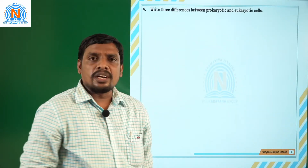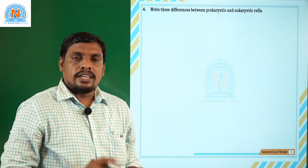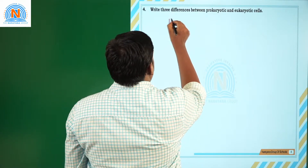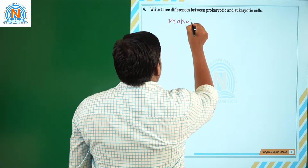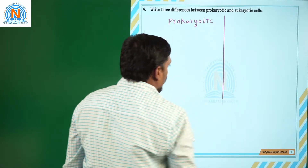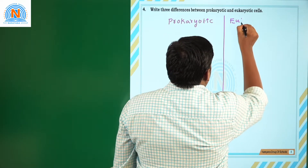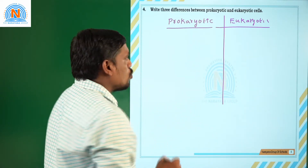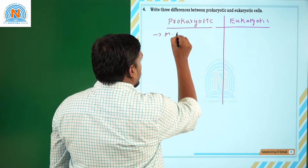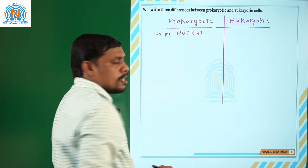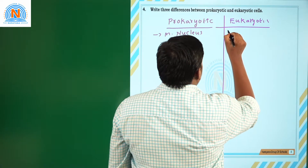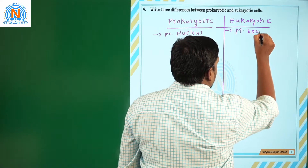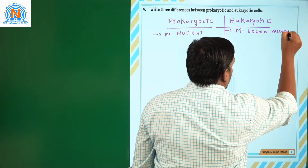Next question: write the differences between prokaryotic and eukaryotic cells. The major difference is that prokaryotic cells do not have a membrane-bound nucleus, so genetic material is distributed in the cytoplasm. Whereas eukaryotic cells have a membrane-bound nucleus — that is the basic difference.